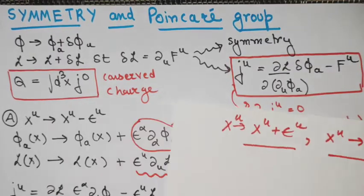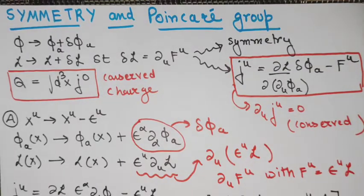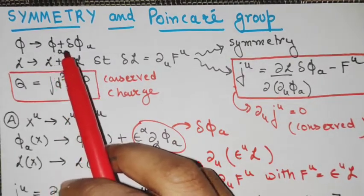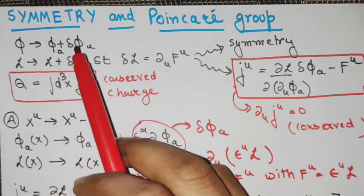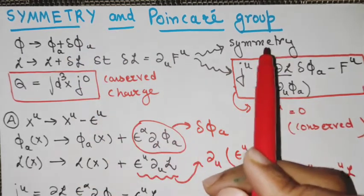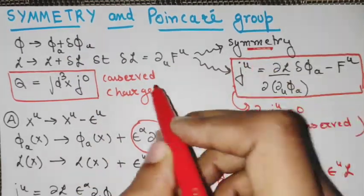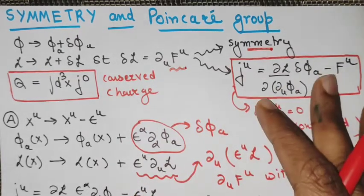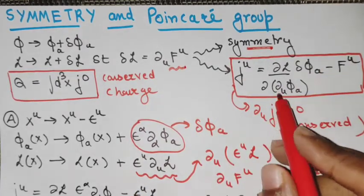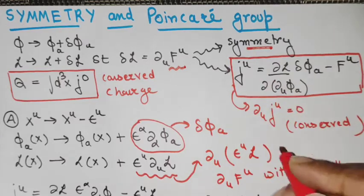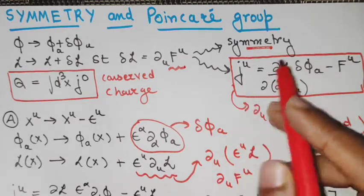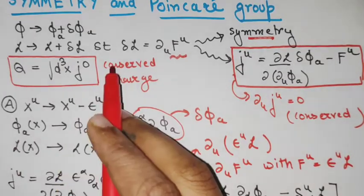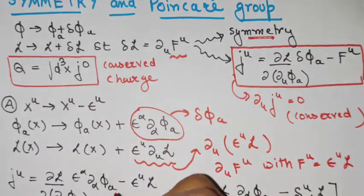We have discussed the idea of symmetries, and understood that if a field changes by some transformation, that corresponds to a symmetry when the Lagrangian changes by a total derivative. Corresponding to every symmetry, we have a conserved current given by a specific formula derived by varying the action. We have also seen the conserved charges given in integral form.